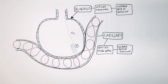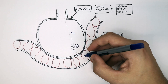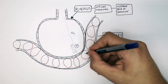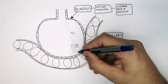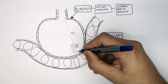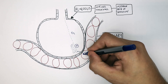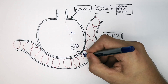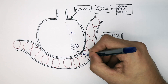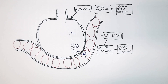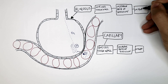Oxygen is then going to diffuse through the walls of the alveolus and the capillary into the low oxygen concentration inside the erythrocyte. So the oxygen will diffuse from a high to low concentration into the erythrocyte.